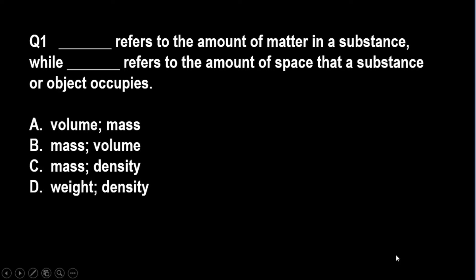Question number one on properties of matter: blank refers to the amount of matter in a substance while blank refers to the amount of space that a substance or object occupies. A: volume and mass, B: mass and volume, C: mass and density, D: weight and density.